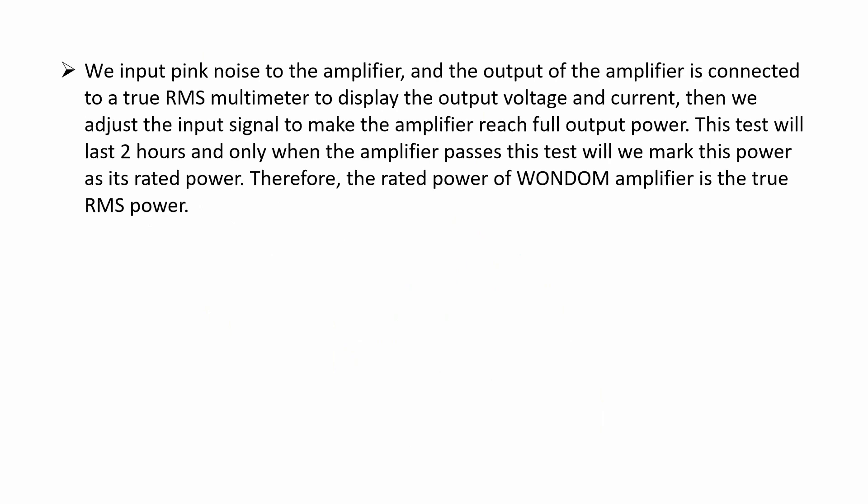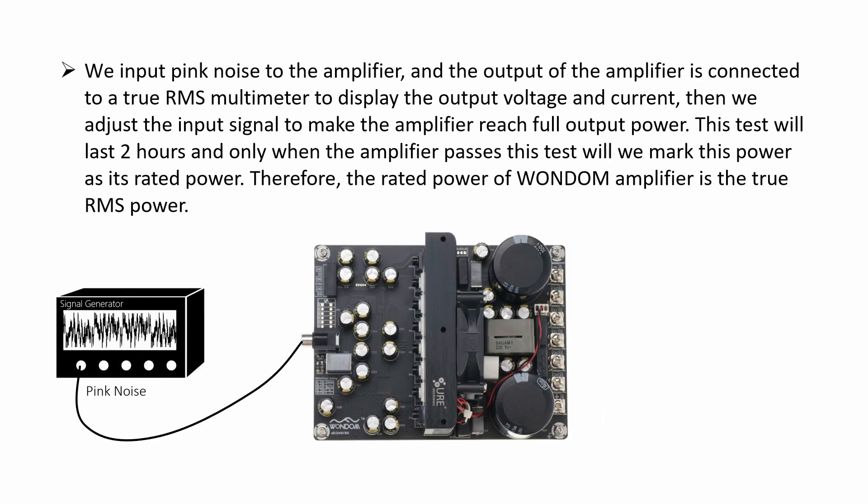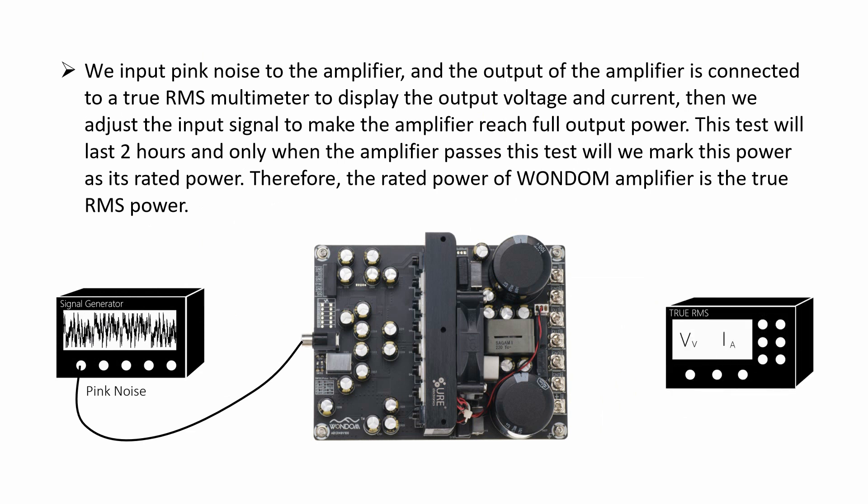We input pink noise to the amplifier, and the output of the amplifier is connected to a true RMS multimeter to display the output voltage and current. Then we adjust the input signal to make the amplifier reach full output power. This test will last two hours, and only when the amplifier passes this test will we mark this power as its rated power. Therefore, the rated power of Wondom amplifier is the true RMS power.